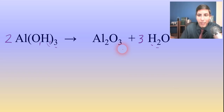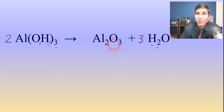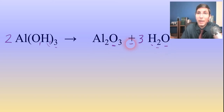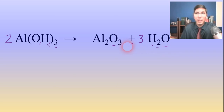Here's another tip: if you ever have an element that's separated by a plus sign — like we have oxygens in two different places here, separated by a plus sign — leave that one for last. Balance that element last. That makes it a lot easier.